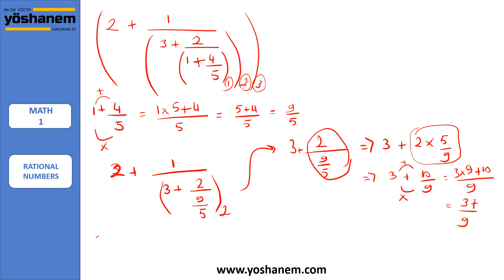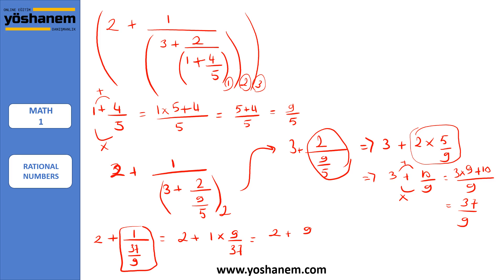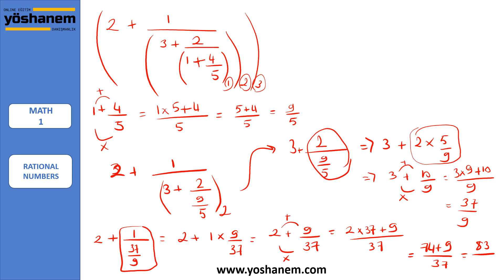Now the question is 2 plus 1 over (37 over 9). There is also a division here, so it's going to be 2 plus 1 times 9 over 37, which equals 2 plus 9 over 37. Let's multiply 2 by 37 and then add 9: 2 times 37 plus 9 over 37 gives 74 plus 9 over 37, and the result is 83 over 37.